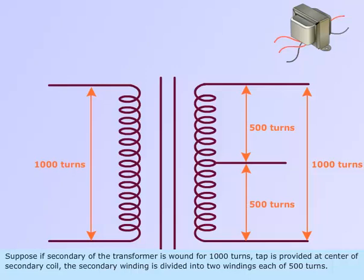Suppose the secondary of the transformer is wound for 1000 turns. Tap is provided at center of secondary coil. The secondary winding is divided into two windings, each of 500 turns.